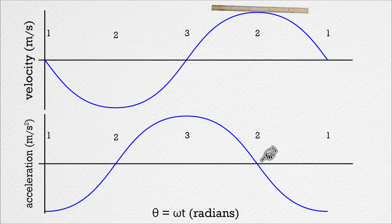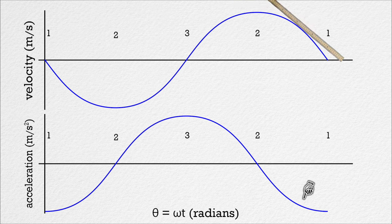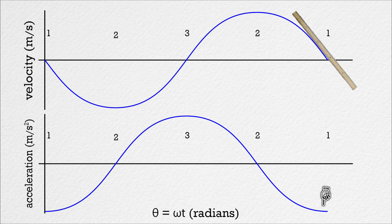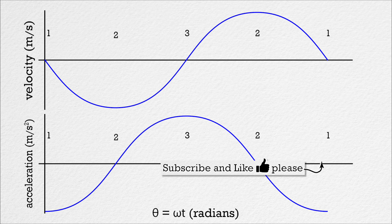From three to two, the slope of the velocity curve is positive but decreases to zero at two. That is why the acceleration is positive and decreases to zero from three to two. From two to one, the slope of the velocity curve starts at zero, becomes negative, and reaches the same maximum magnitude negative value it had back at the original position one. That is why the acceleration is zero at position two, becomes negative from two to three, and increases in magnitude to its maximum negative value at position one. Okay, yeah, that really helps.